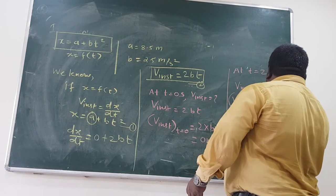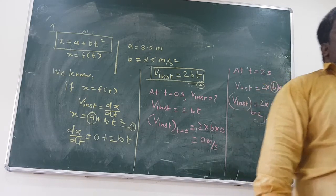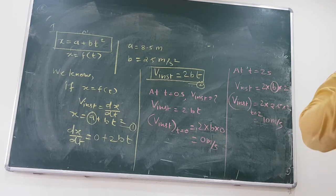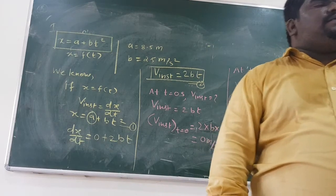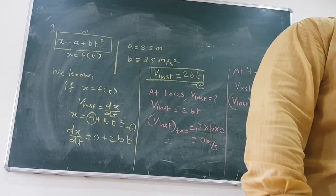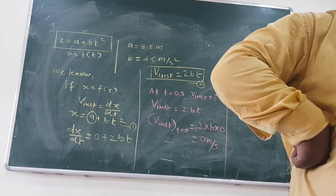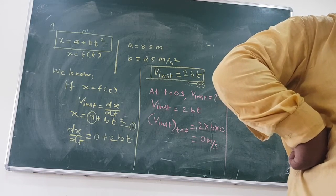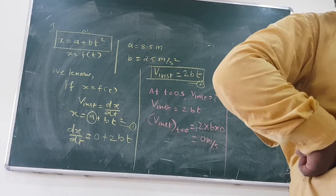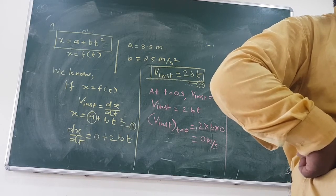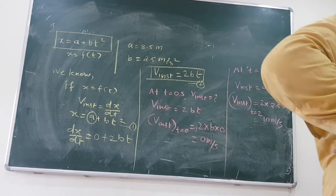Understood how to find instantaneous velocity? If you didn't know how to take a derivative of a function, you cannot find instantaneous velocity. When you follow a straightforward syllabus, you come to know about derivative only at the end of eleventh class — but still you have to find instantaneous velocity. You have to learn derivative. There is one more method: a graphical method — plot a graph of x versus t.